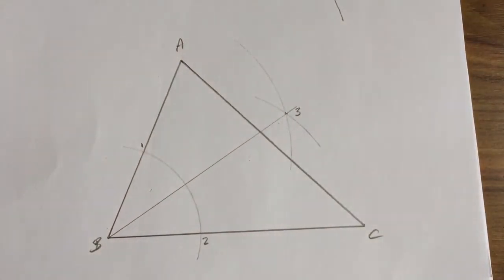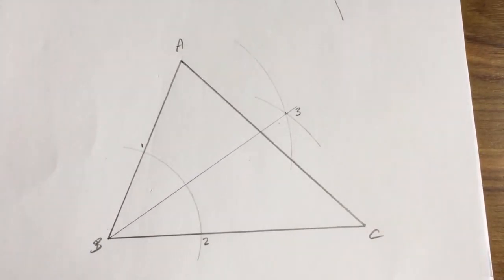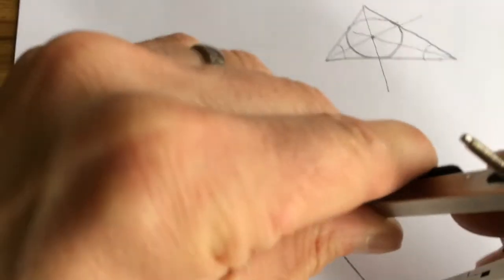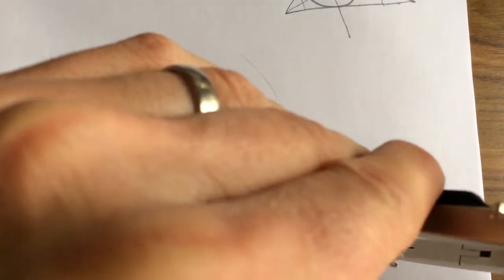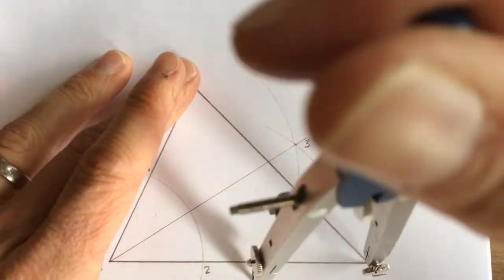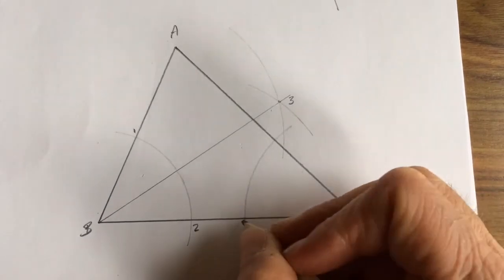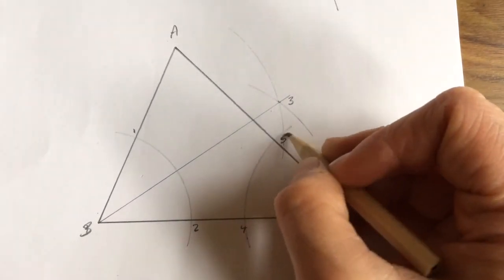So now that's one bisector drawn. I need to repeat this process. I'm going to do it for angle C. So I reduce my compass size down a little bit, put my compass point at C, and I'm going to swing an arc to cross two of the sides. I'm going to call this position four and five.